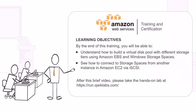By the end of this training you will be able to understand how to build a virtual disk pool with different storage tiers using Amazon EBS and Windows Storage Spaces, and see how to connect to Storage Spaces from another instance in Amazon EC2 via iSCSI.